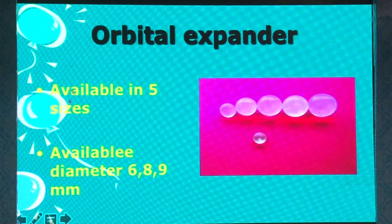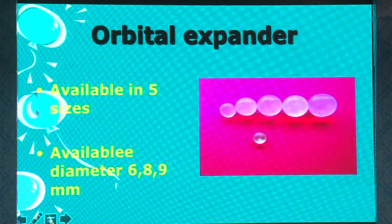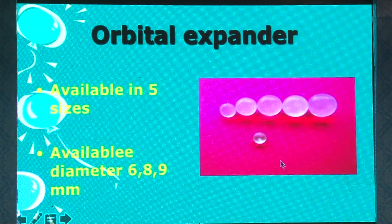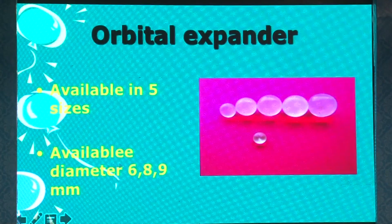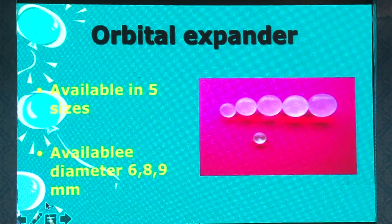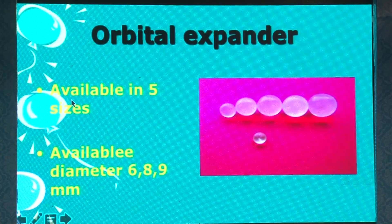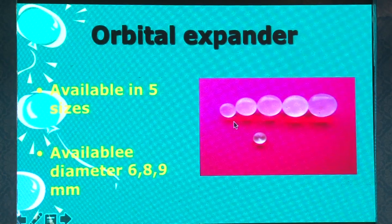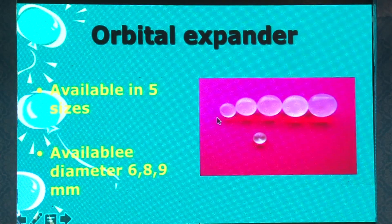Orbital expanders, which increase the orbital volume, are also available in different sizes — 6, 8, 9 millimeters and so on. These are spherical in nature and they can expand the orbital size.